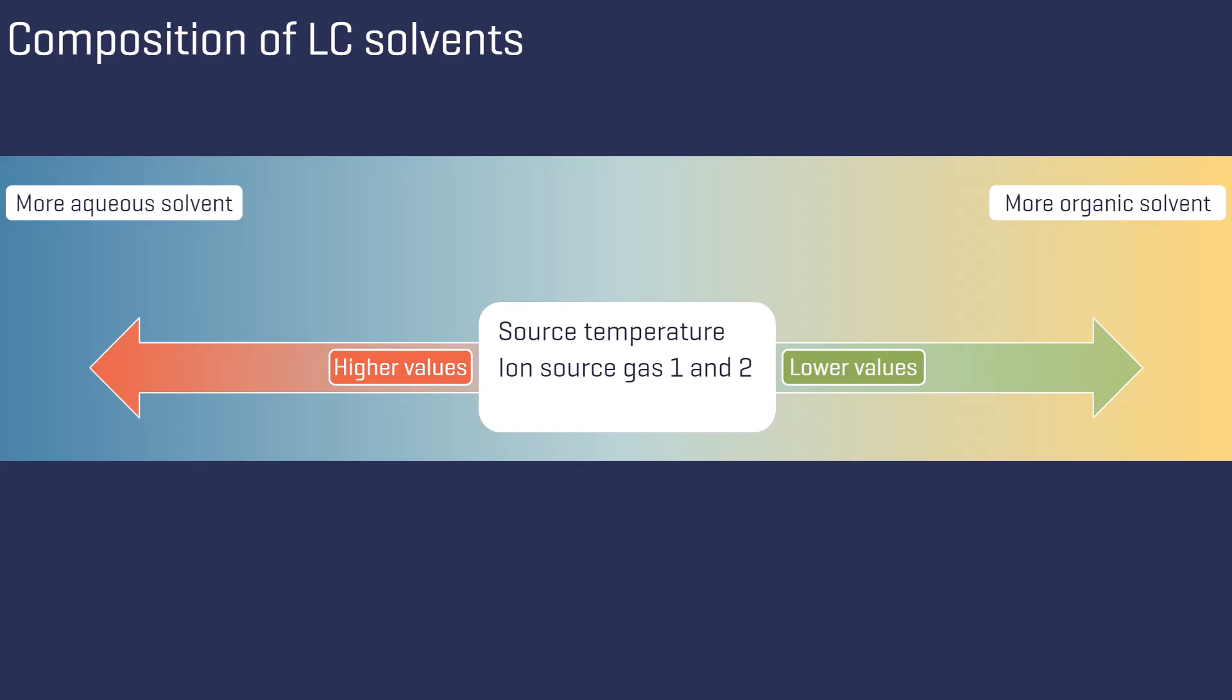This means that the source temperature and ion source gas 1 and 2 need to be lower the more organic solvent is entering the ion source. Additionally, less curtain gas is required since fewer larger droplets need to be prevented from entering the mass analyzer.